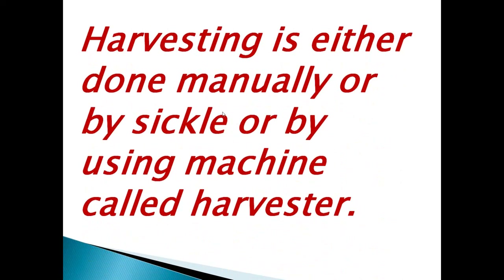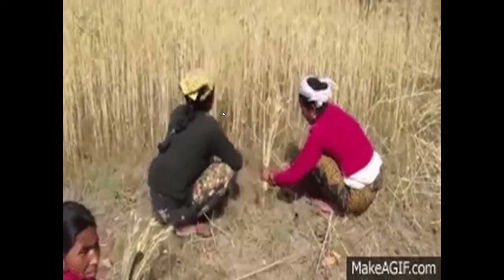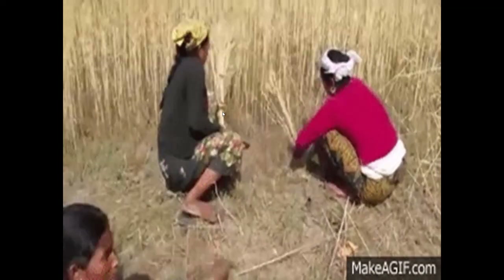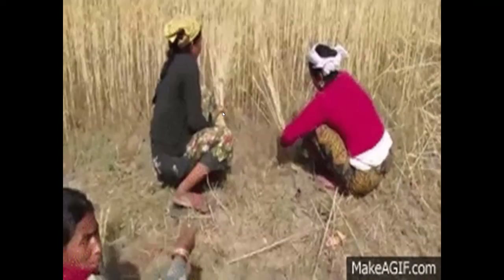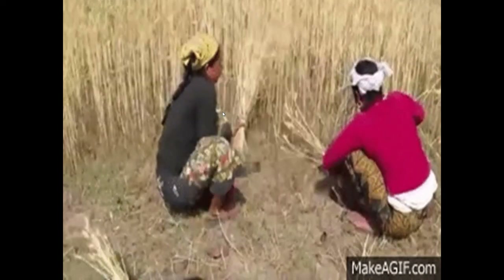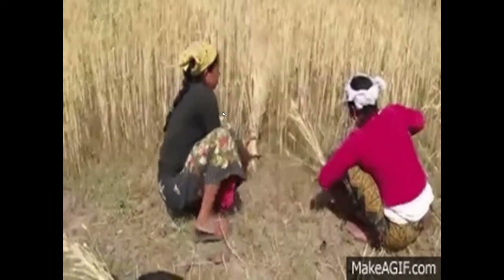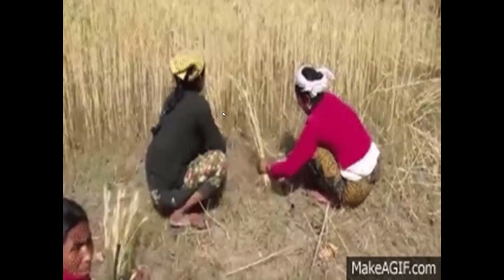Harvesting is either done manually by using a sickle, or by using a machine called a harvester. In this picture, farmers are cutting the crops manually using a sickle.